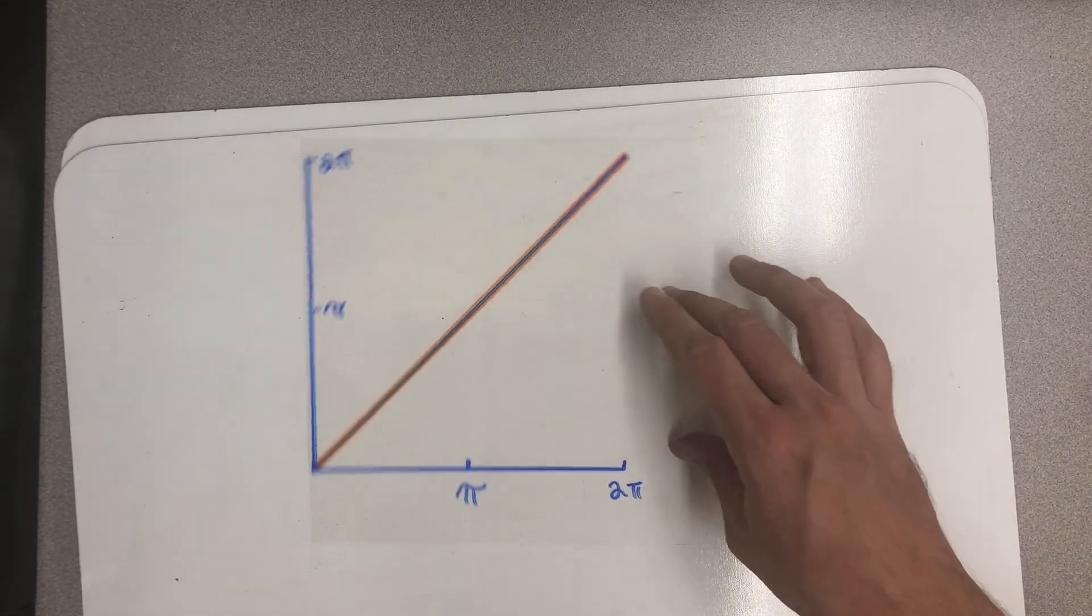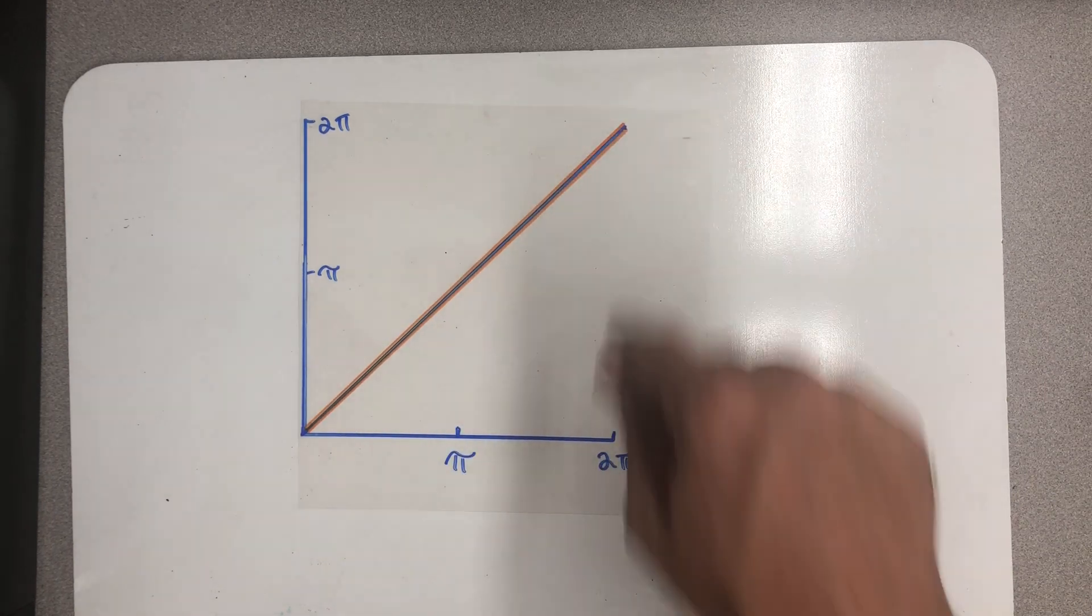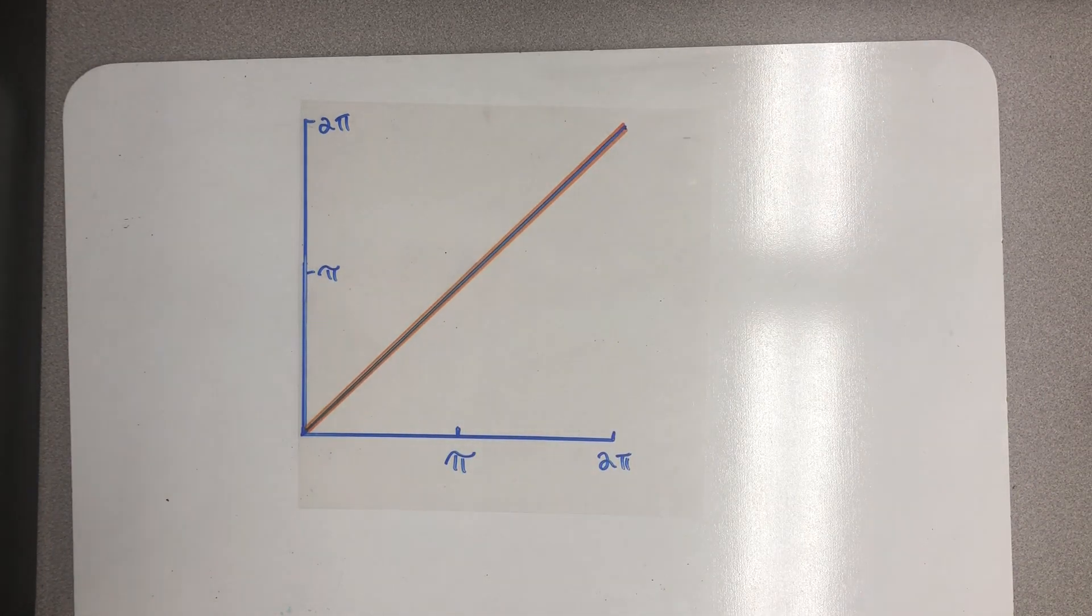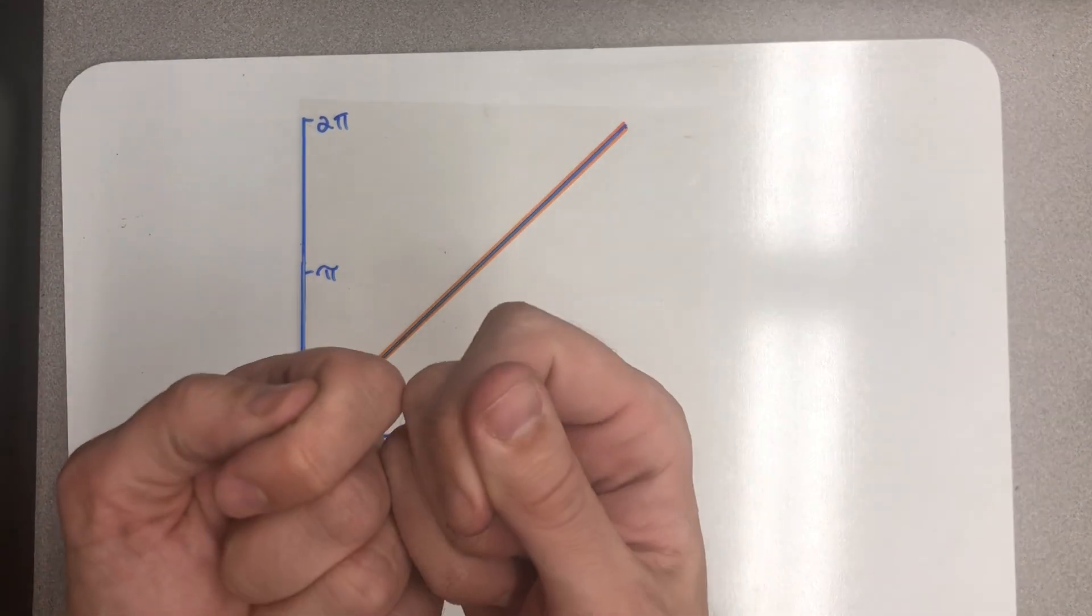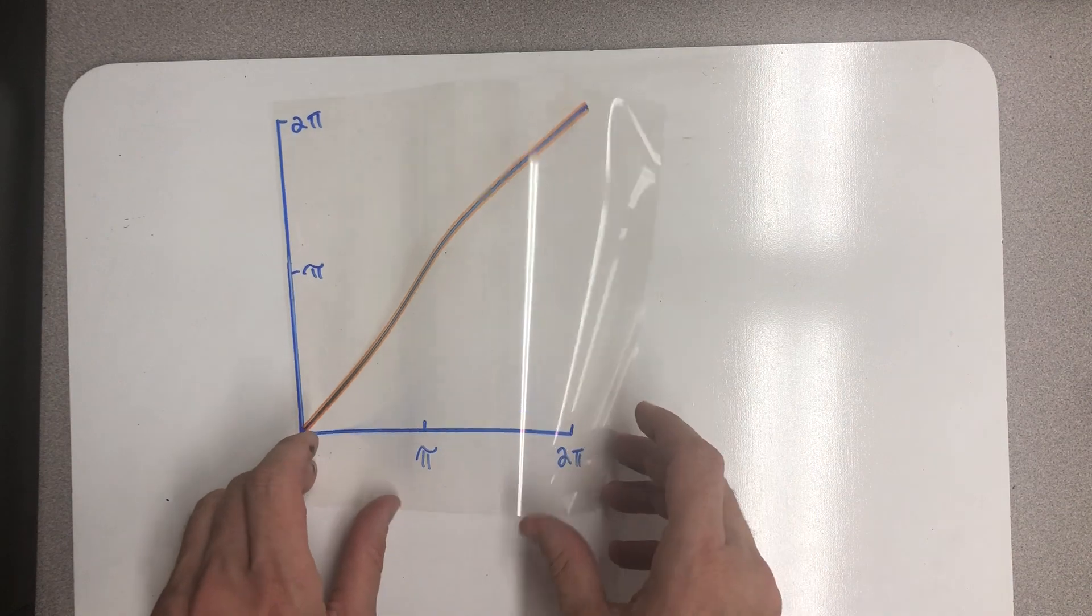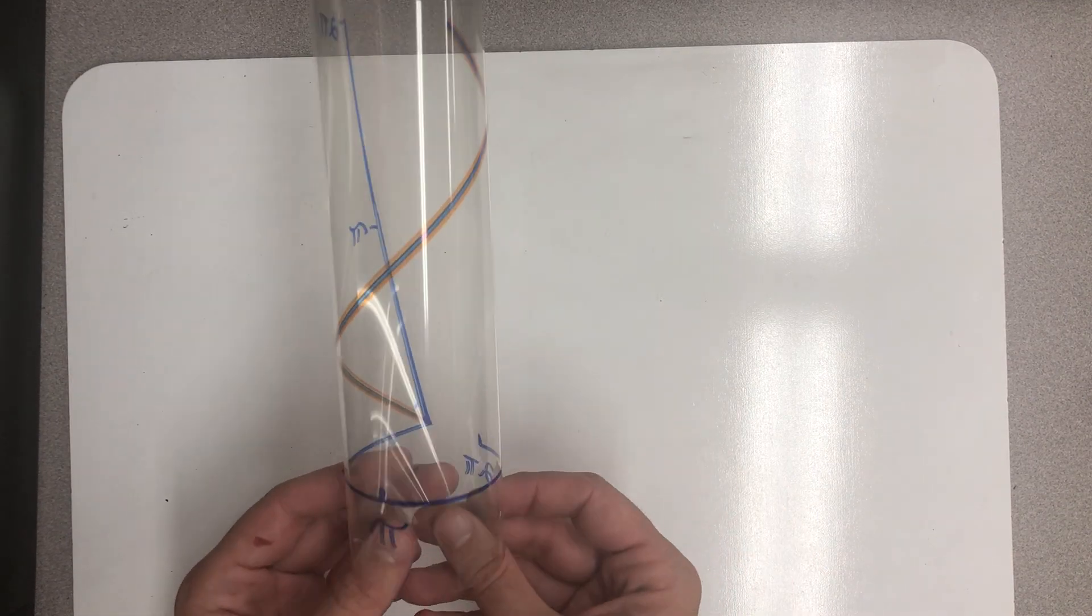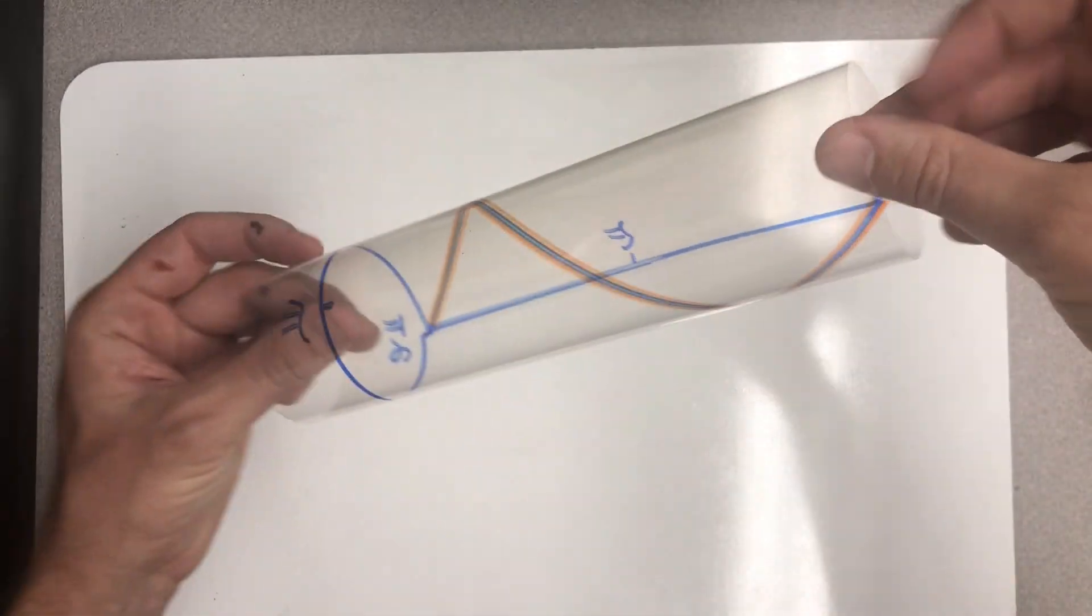So what I have here, I'm imagining that this orange and blue stripe is my helix. This interval that's 2π long is actually the circumference of the circle opened up, and then this is the height z. So if I just fold this back around to form the unit circle, I have my helix.